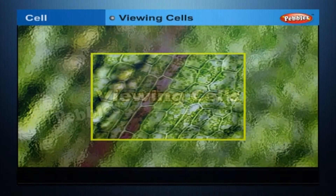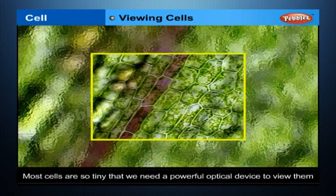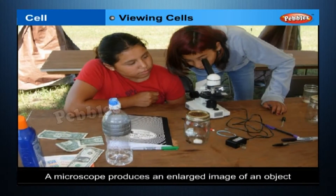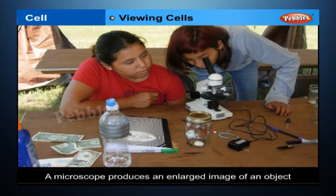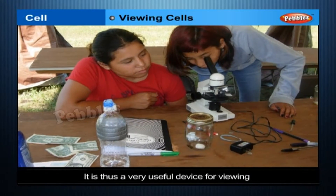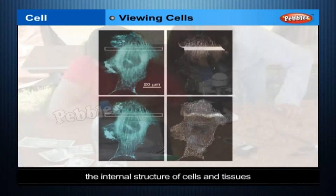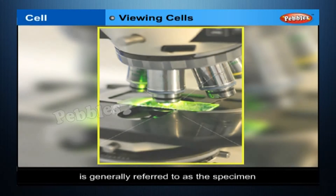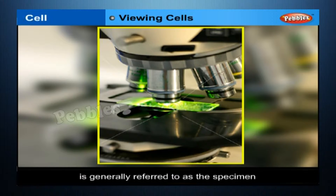Viewing Cells. Most cells are so tiny that we need a powerful optical device to view them. A microscope produces an enlarged image of an object and is a very useful device for viewing the internal structure of cells and tissues. The object to be viewed under a microscope is generally referred to as the specimen. A thin sheet of glass, called a microscope slide, is used to hold a small sample of the specimen.